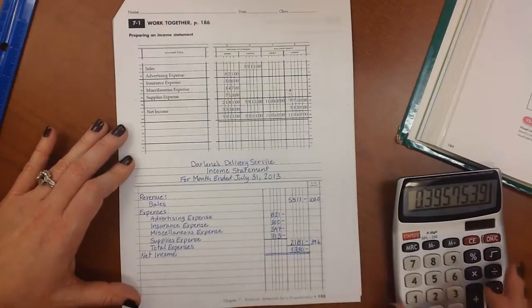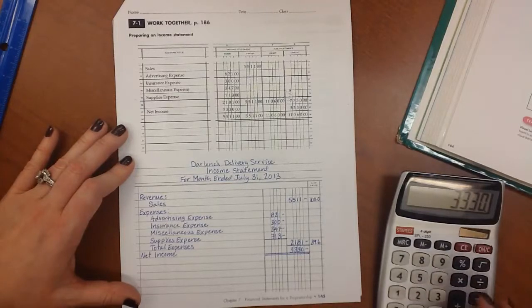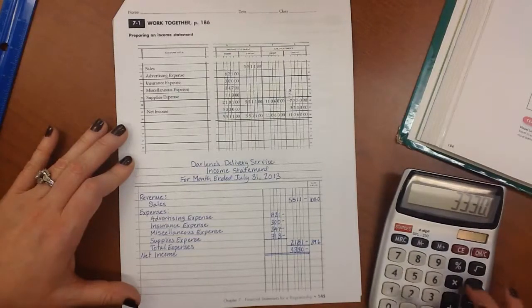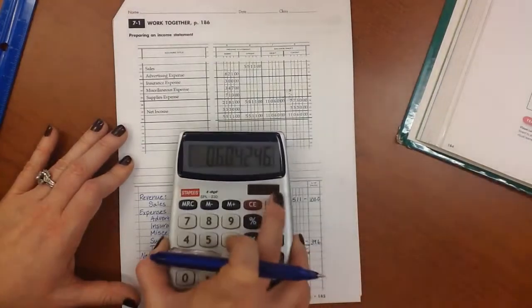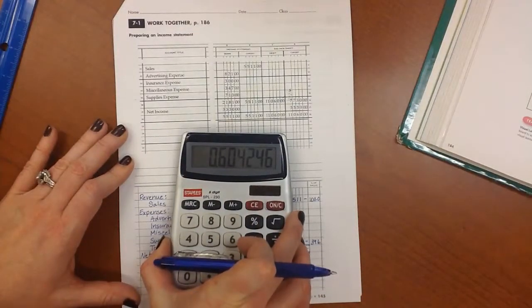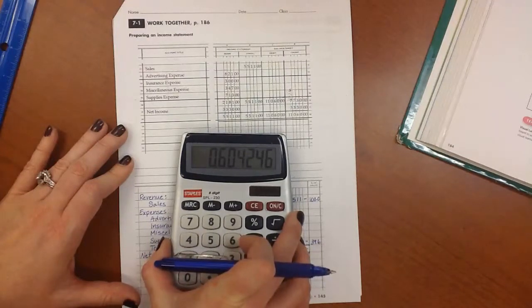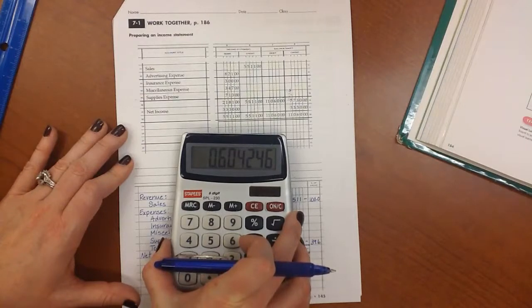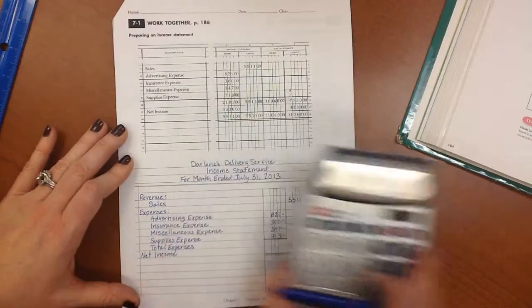Then we do the same thing with our net income. We take 3330 divided by 5511, and I get .604246. We move the decimal over two places to the right, and that gives us 60.4. And the next number after a 4 is a 2, so we don't have to round, so we just do 60.4.